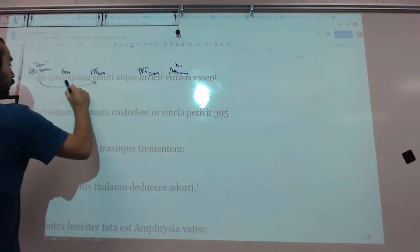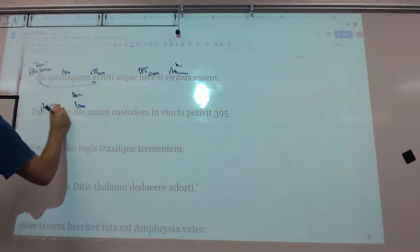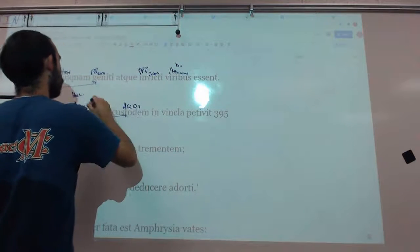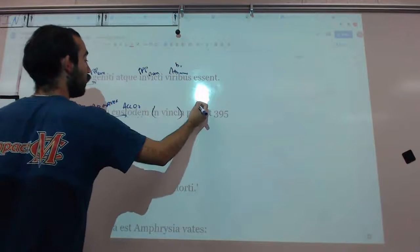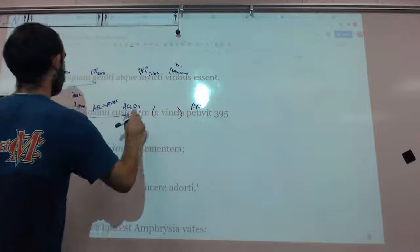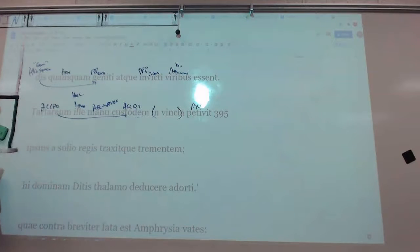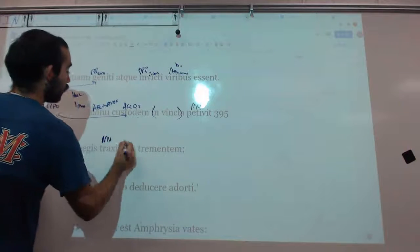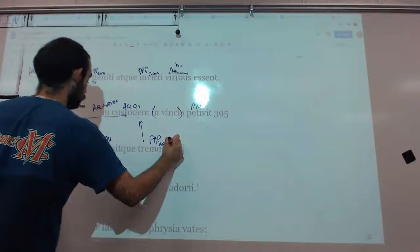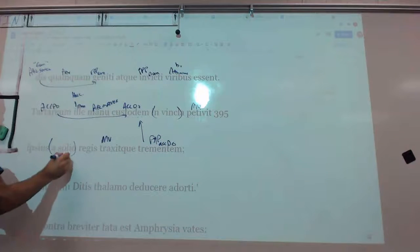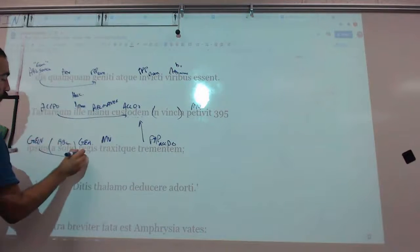This is a genitive or from gods. I would say more of an ablative of source from. And it goes with this word, geniti, which is PPP, that's nominative. Born from gods, and unconquered. PPP is also an adjective. And they were unconquered, and this is an ablative of means by men. Then, ille, this is going to refer to Hercules, this is nominative. He sought with his hand in chain, in a chain, he sought the Tartarean guard, the guard of Tartarus.